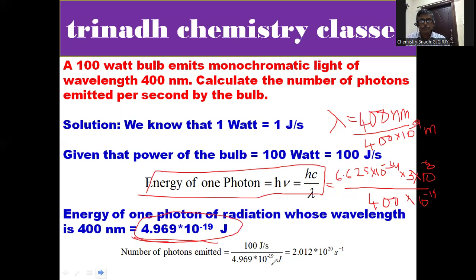The number of photons emitted is equal to 100 joules per second divided by 4.969 times 10 to the power of minus 19.